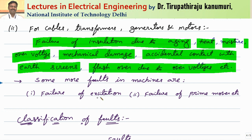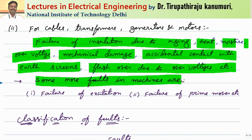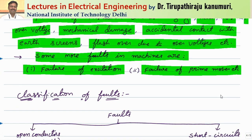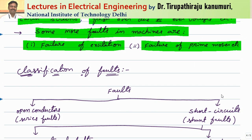Flashover due to over-voltages may also lead to problems in cables, transformers, or machines. Some more problems may happen in machines exclusively: failure of excitation in synchronous machines, and failure of the prime mover in generators. These may also lead to problems, so care should be taken for these conditions.